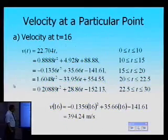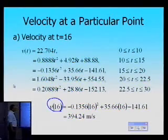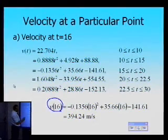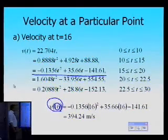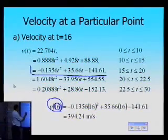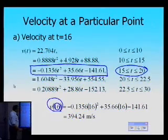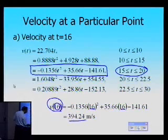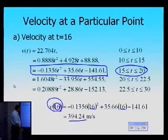The first problem we were asked to solve was: can you find out the value of the velocity at t equal to 16? Although I have found all five splines going from 0 to 30, I have to choose the right spline. Since this value is 16, I'll be choosing the spline valid between 15 and 20. I substitute time t equal to 16 into that spline, and I get the velocity at 16 seconds, which turns out to be 394.24 meters per second.